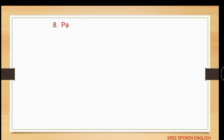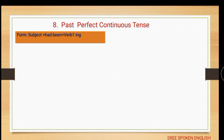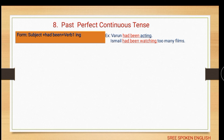The last subcategory of past tense: past perfect continuous tense. The form is: subject + had been + verb base form in -ing form. Example: 'Warren had been acting.' Another example: 'Ismail had been watching too many films when he was young.'